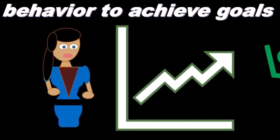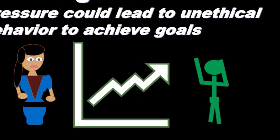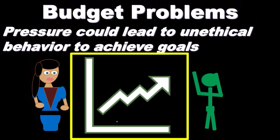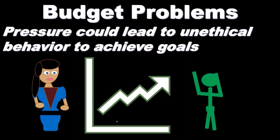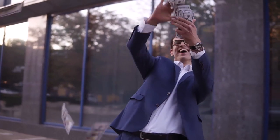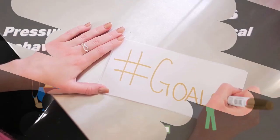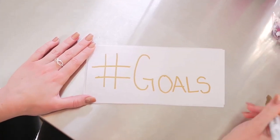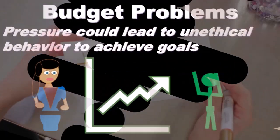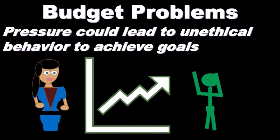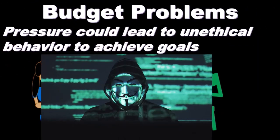Another problem inherent to the budgeting process is that pressure could lead people to unethical behavior. We want to set the budget to a point that's difficult but still meetable, and we want to see continuous improvement over time. If compensation objectives like bonuses are tied to hitting certain marks, that adds significant pressure. As we set high goals for maximum performance, we must be aware that people could be incentivized toward unethical behavior. The culture of the organization must make clear that we'd rather have someone miss a goal than engage in unethical behavior to achieve it.